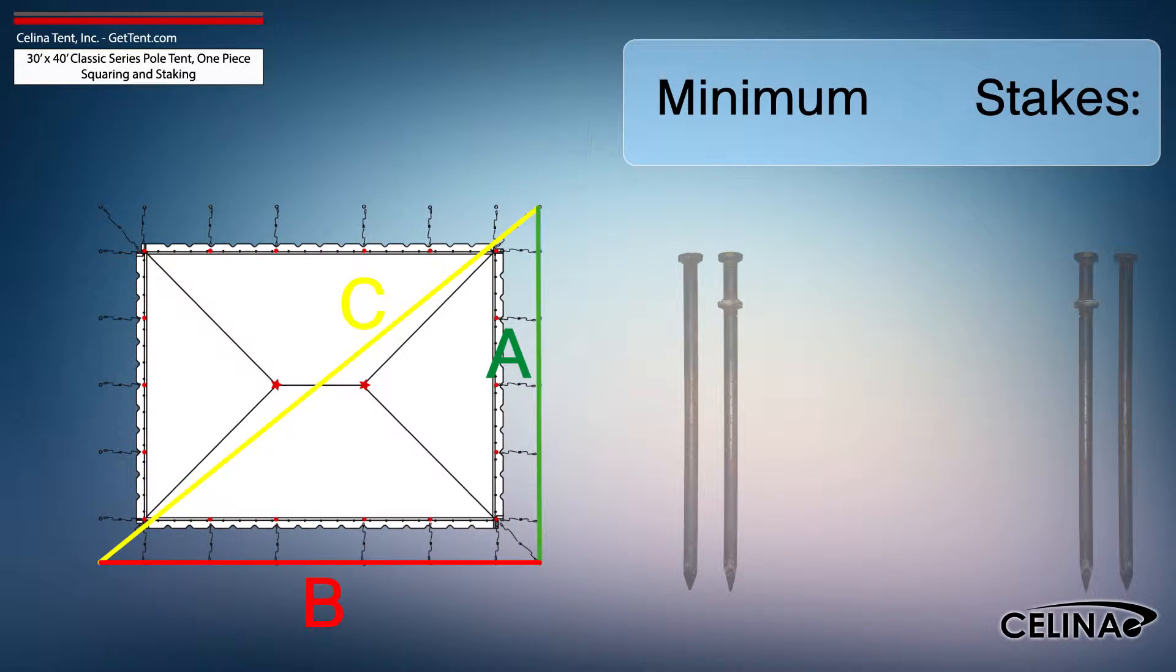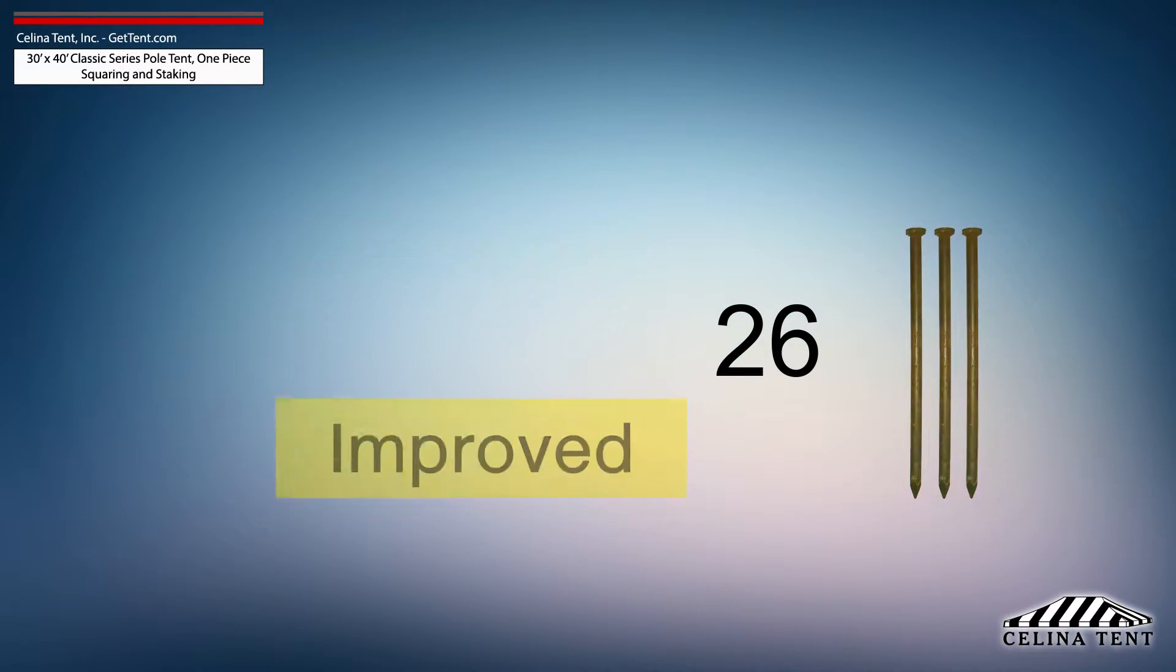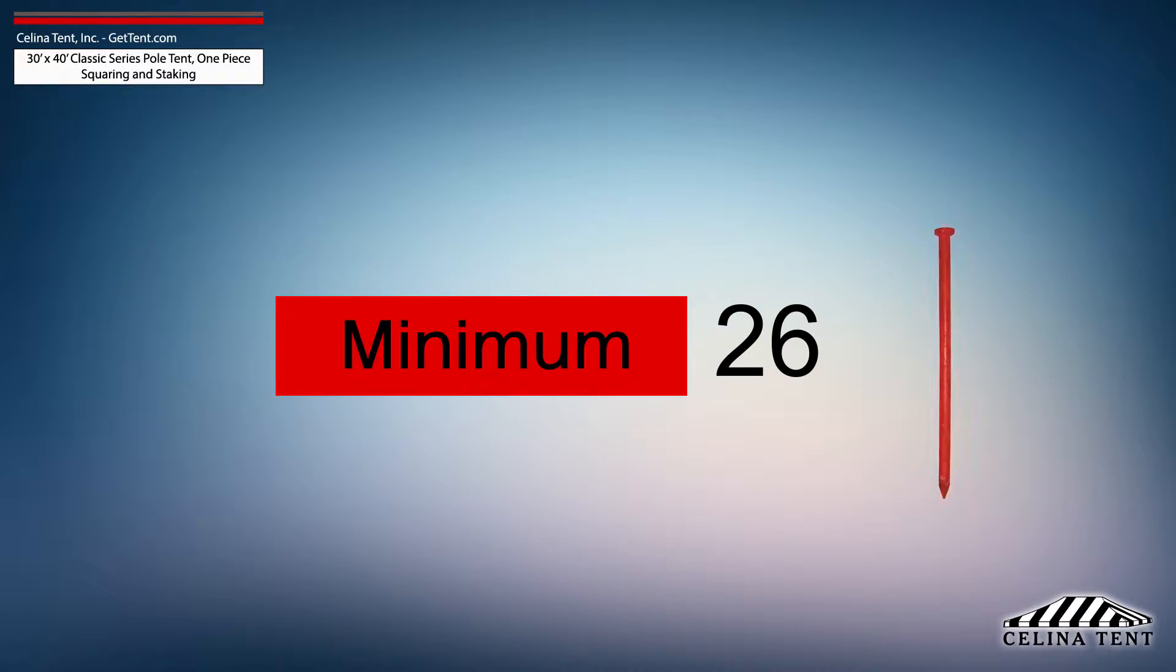Solana recommends that a 30-foot by 40-foot classic series pole tent receives a minimum of 26 stakes: 3 stakes for each corner pole and 1 stake for each side pole. This amount of stakes provides the minimum amount of security for a pole tent of this size.